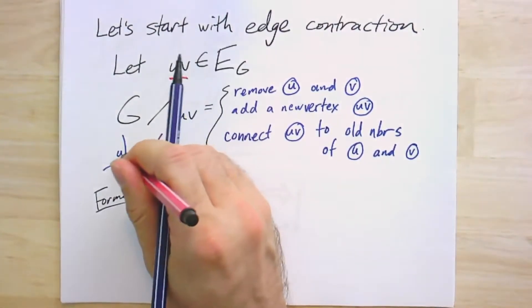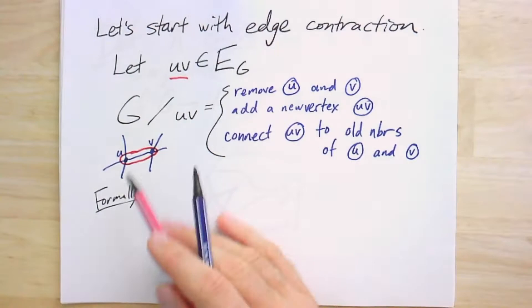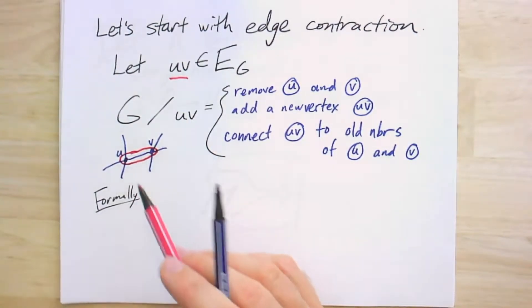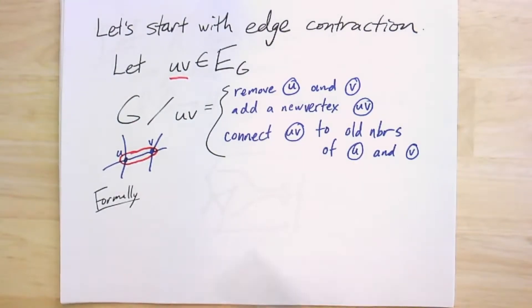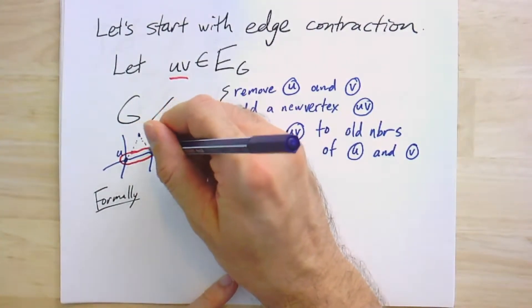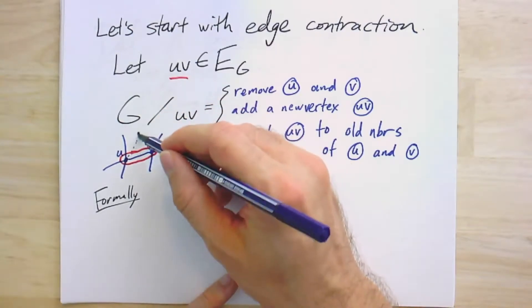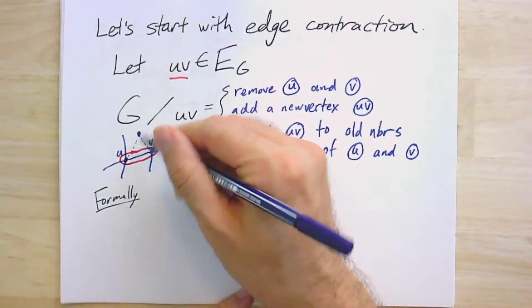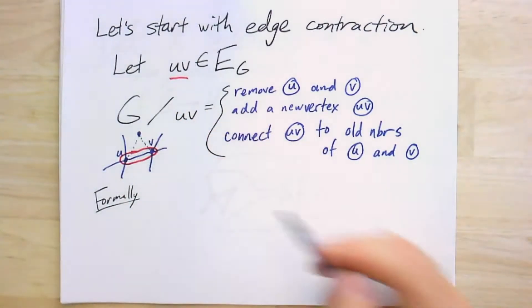And I replaced them with this new vertex, which has all the neighbors of both of them. And again, if there were in fact two edges coming out of here to the same vertex, I'd end up with only one edge to that vertex in my contracted graph.